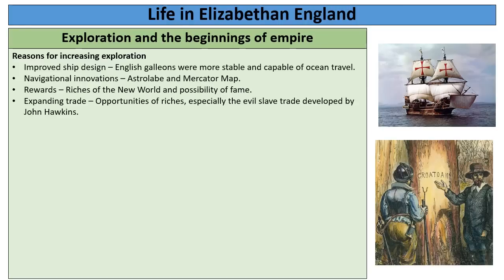The main reasons are these. Firstly, improved ship design — English galleons designed in the 16th century were more stable and more capable of crossing oceans than ships of previous centuries, meaning travel was safer, more reliable and people were more willing to do it. We also get improved navigational technologies. A new invention called the Astrolabe allowed sailors to use stars to work out where on the globe they were using latitude and longitude — very useful when far from land in the middle of the ocean. The Mercator map was also one of the earliest and most accurate world maps, which really allowed people to explore the Atlantic Ocean in particular.